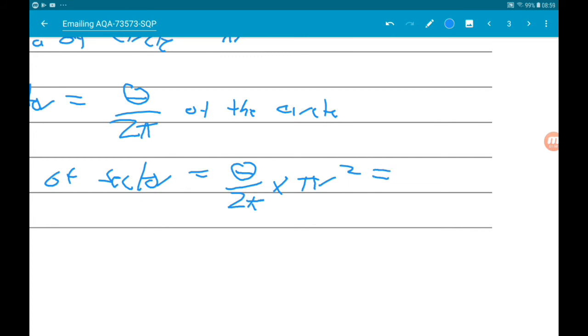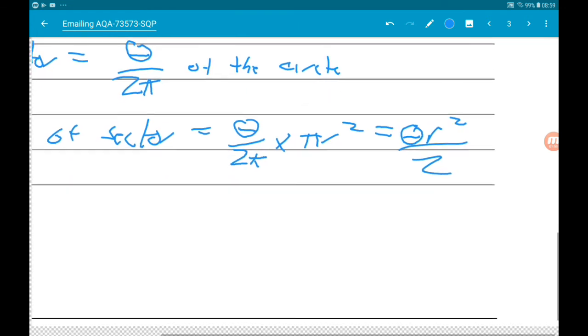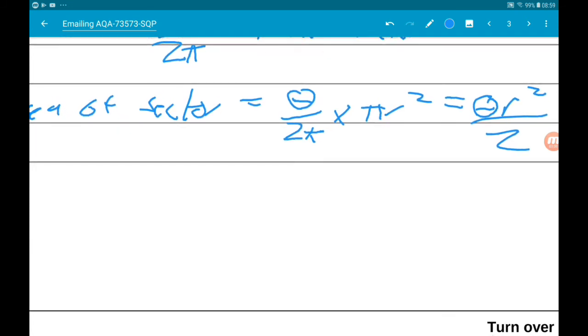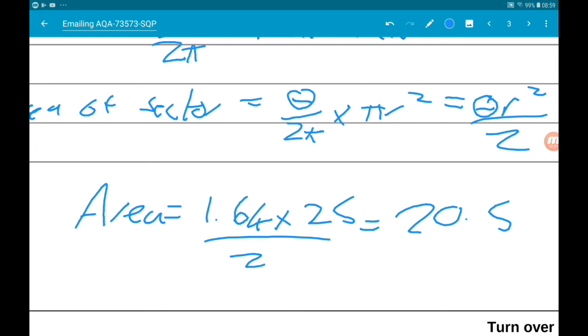So the pi's cancel and we get left with theta r squared over 2. So if we plug in our numbers, we get area is 1.64 times 25 all over 2, which will give us 20.5.